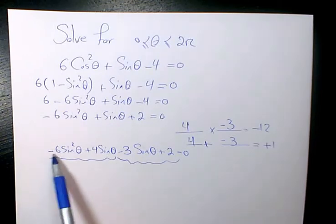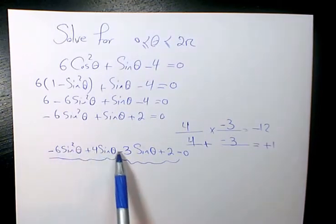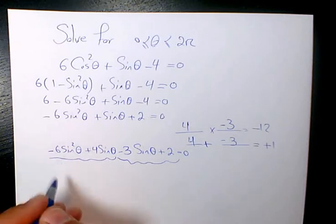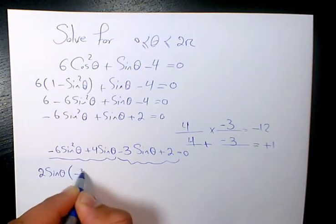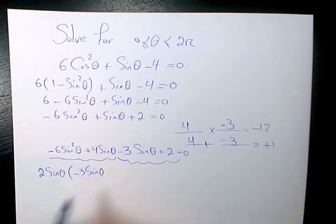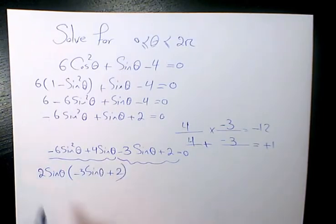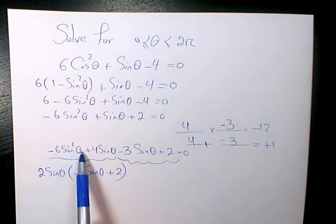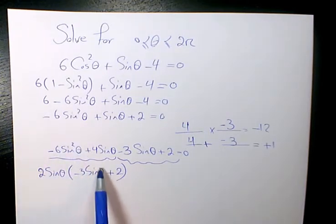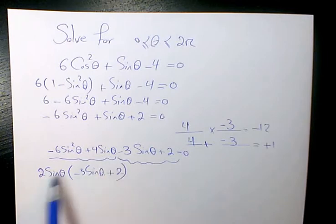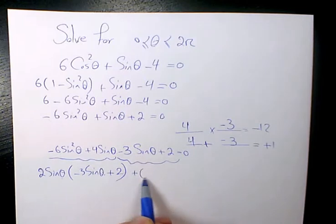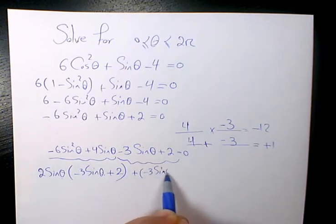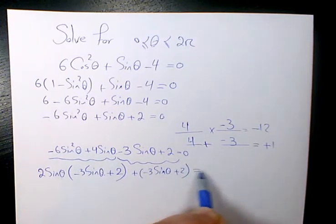Now I factor by grouping. The first part is negative 6 sine squared theta plus 4 sine theta. I factor out 2 sine theta: negative 6 sine squared theta divided by 2 sine theta is negative 3 sine theta, and 4 sine theta divided by 2 sine theta is 2. So the first group gives 2 sine theta times (negative 3 sine theta plus 2).